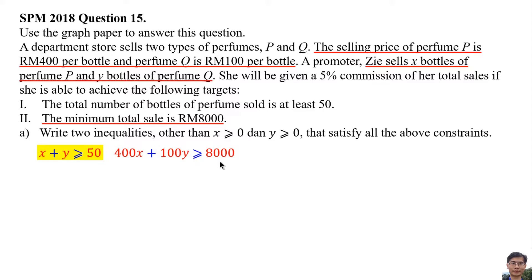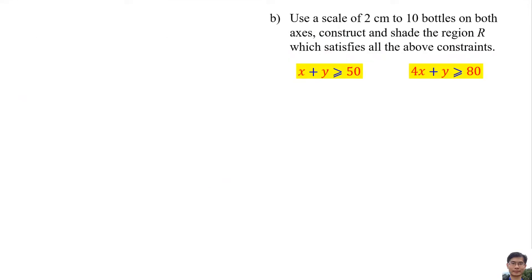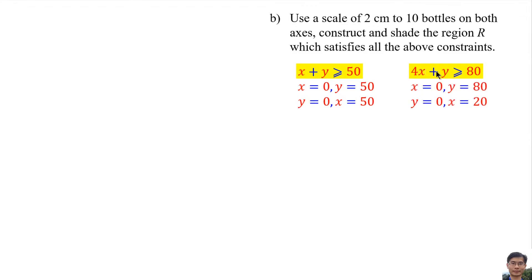Then simplify. These two lines must be drawn on the graph. For the first line, when X is 0, Y is 50; when Y is 0, X is 50. For the second line, when X is 0, Y is 80; when Y is 0, X is 20.